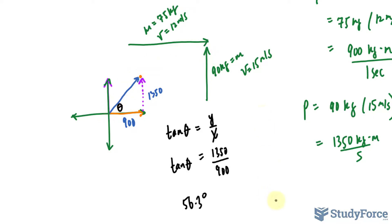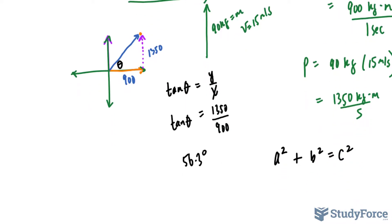So we can do that by using Pythagorean's theorem. Remember, it's a right triangle at the end of the day, right? So a squared plus b squared equals c squared. We're looking for c.